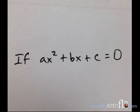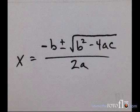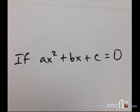If ax squared plus bx plus c equals zero, there's an important formula you should know. x equals negative b plus or minus the square root of b squared minus 4ac all over 2a.